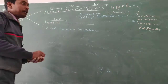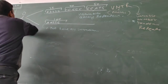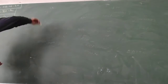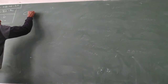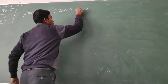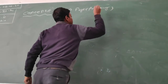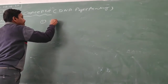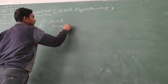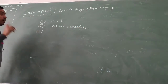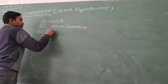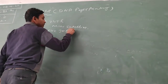Now, returning to the process of DNA fingerprinting, this is the total concept. Let's summarize the basic concepts of DNA fingerprinting. First point: we use VNTR. Second concept: VNTR is a type of mini satellite. Third concept: VNTR is a type of mini satellite with variation among its nitrogenous base pairs.